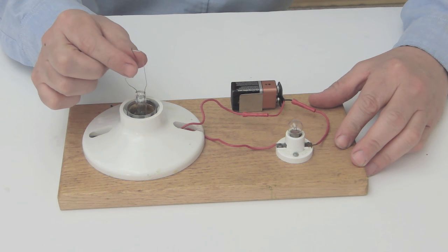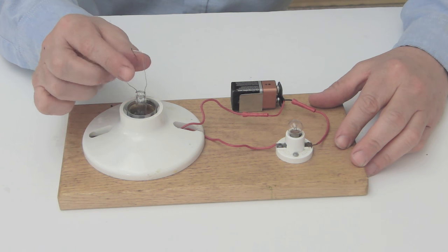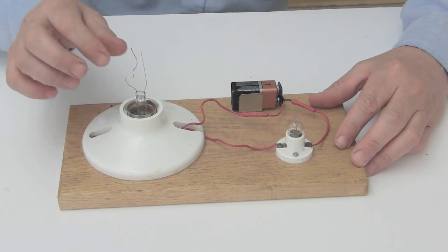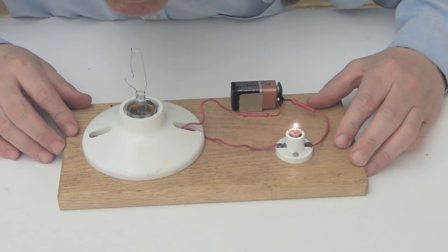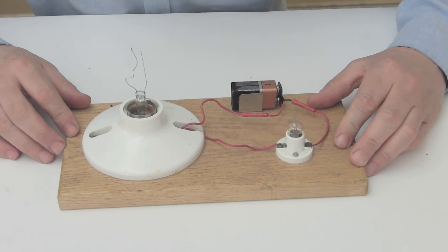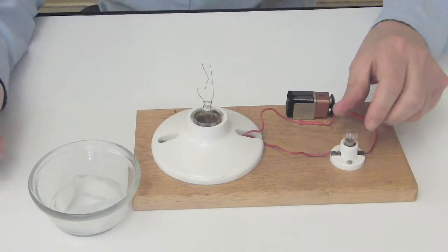Now, we can get part of the answer by touching the filament very carefully. Yeah, it's hot. And that reduces the flow of electricity. Blowing on it cools it, allowing more electricity to flow so the bulb can light.